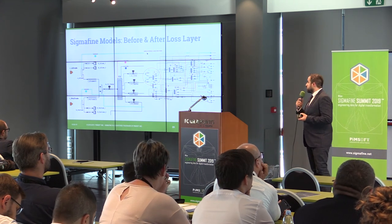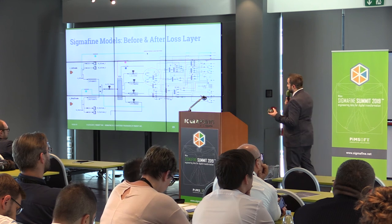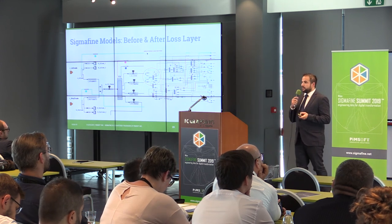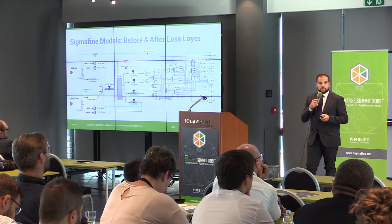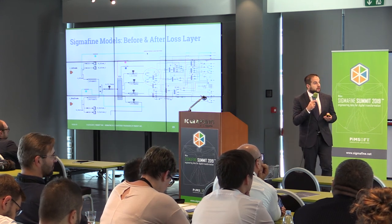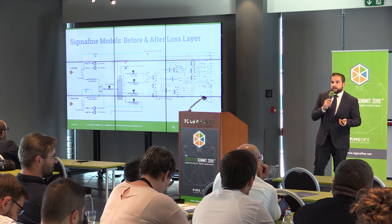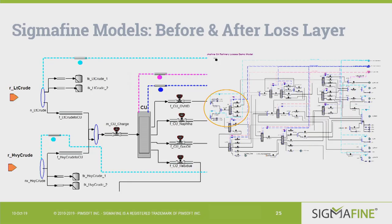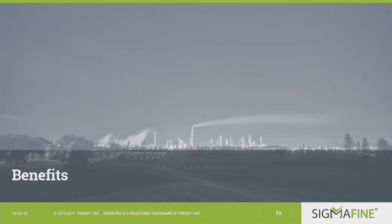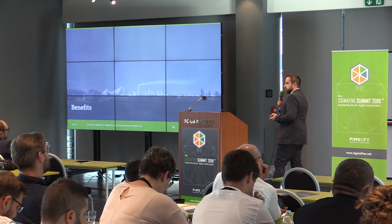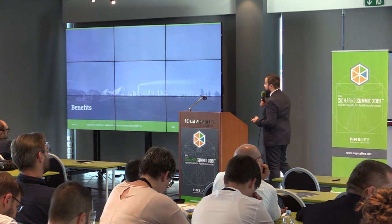This allows extending SigmaFine for oil loss control without any impact on the accounting. The accounting can continue to use the original display with the new layers not visible, while the loss control team uses the display with the new layers visible. The benefits go beyond just providing the same tool to both teams.